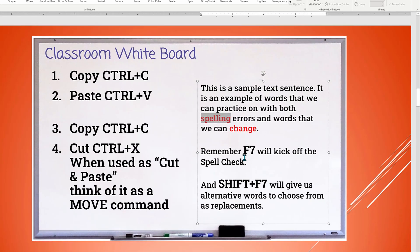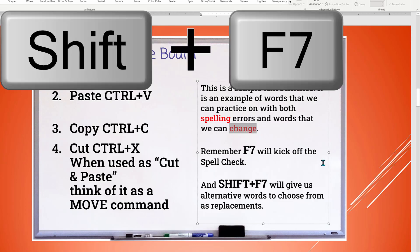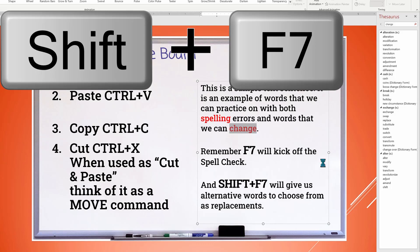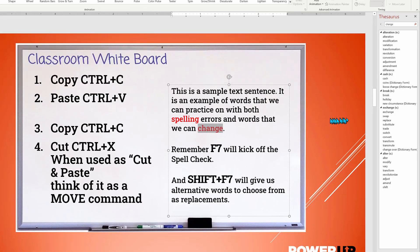For the thesaurus tool, you should first select the word you want suggestions for, and then hold down the shift key and press F7. And the tool will pop up on the right. Let's look for an alternative to the word change. You'll see them listed on the right side. We'll select one and choose insert.